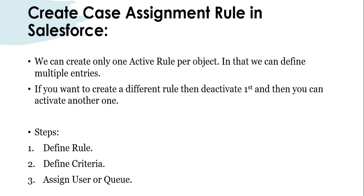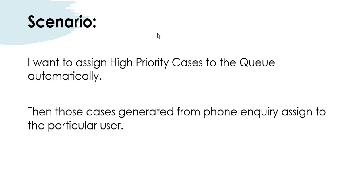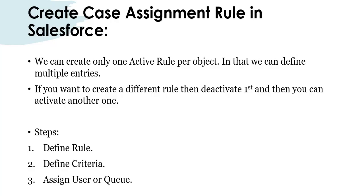It also enhances general effectiveness and customer service. Before creating a case assignment rule, remember we can only create one active rule per object, and in that rule we can define multiple entries and criteria. First we need to define the rule, then define criteria, and then assign a user or queue. As a scenario: I want to assign high priority cases to a queue automatically, and cases generated from phone inquiry to a particular user — both defined in one rule. Let's jump to the org.